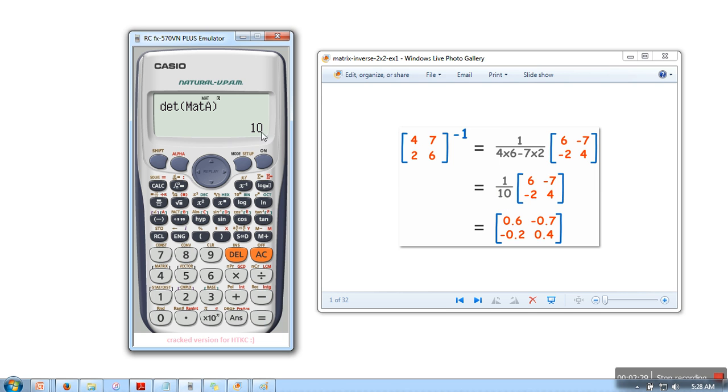Now we are going to calculate inverse. So inverse calculation is very easy, press shift 4. So if you can see: 0.6, minus 0.7, minus 0.2, and 0.4. So this one is the inverse of our matrix.